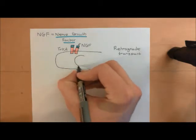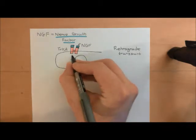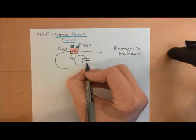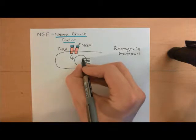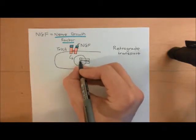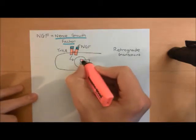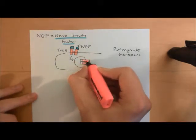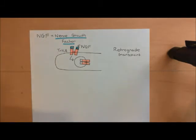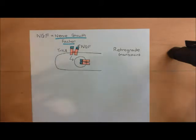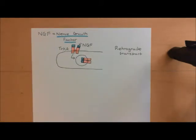An endocytic vesicle is produced which has our TrkA receptor dimer with nerve growth factor molecules bound. The TrkA receptors are dimerised together, with the nerve growth factor molecules bound to them. This vesicle is now going to be transported up the nociceptor, up the axon, all the way up to the cell body.